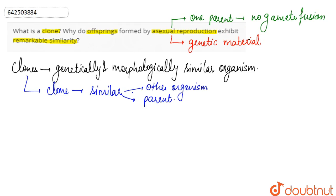There is no blending, no changes, and no variation in the genetic material, because the same genetic material is passed on to the progeny from the parent. So there are minimal chances of variation, which is why the progeny is an exact copy and shows remarkable similarity to the parent.